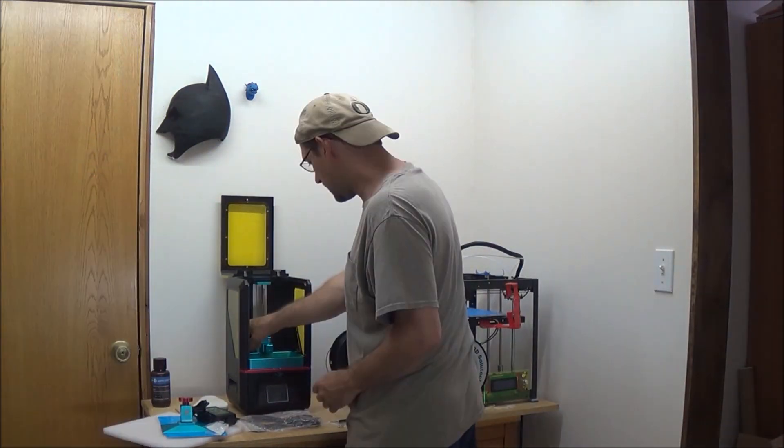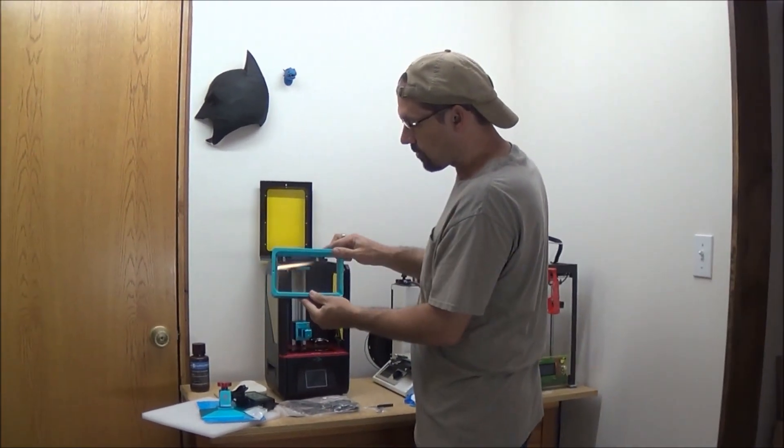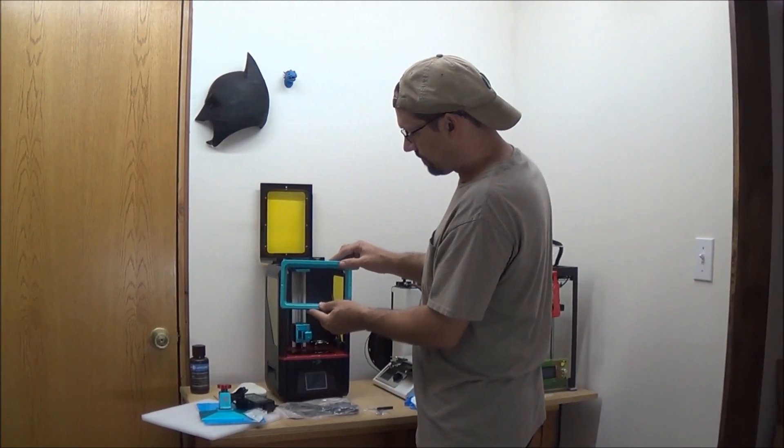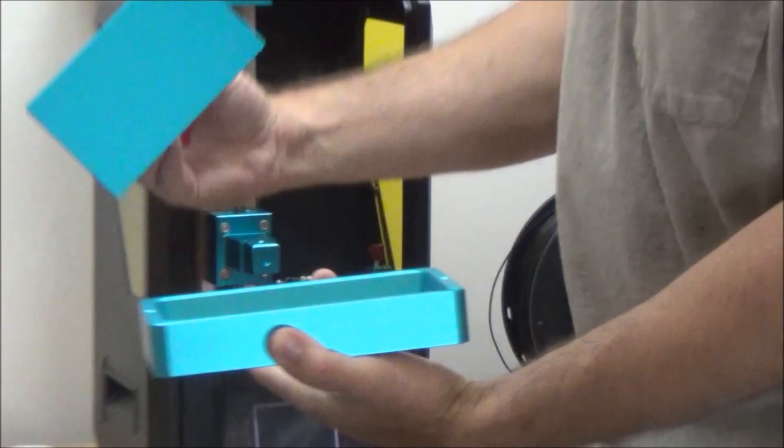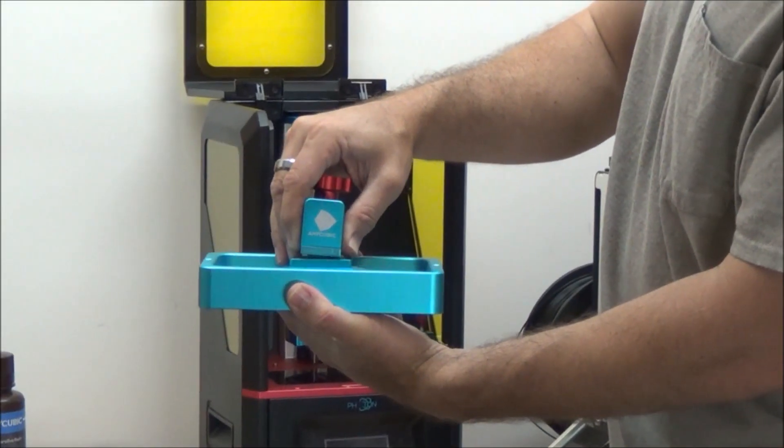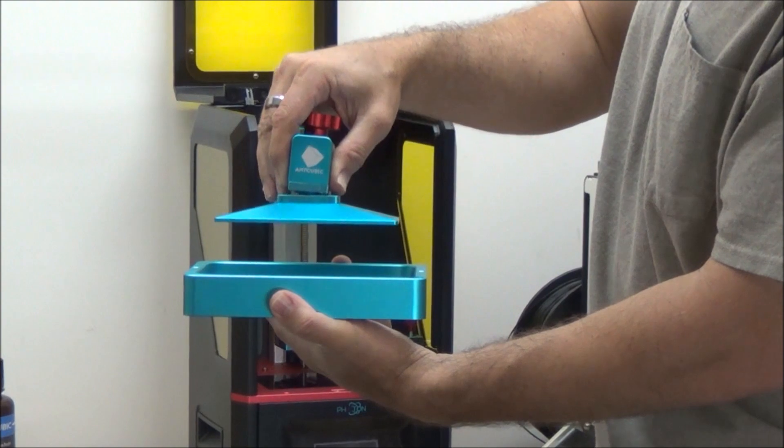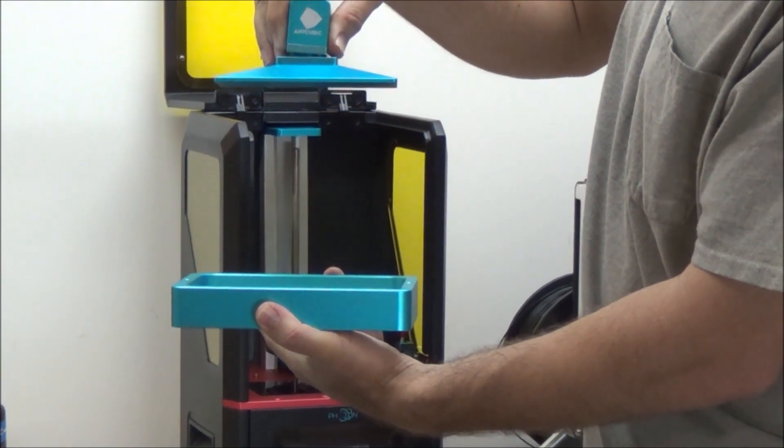This is very cool. And then this is the vat. It's simple. So this is what you pour the resin in, fill it up like a little tiny swimming pool. This guy will come down and start the print, and it will slowly basically pull it out of the liquid until it's complete.